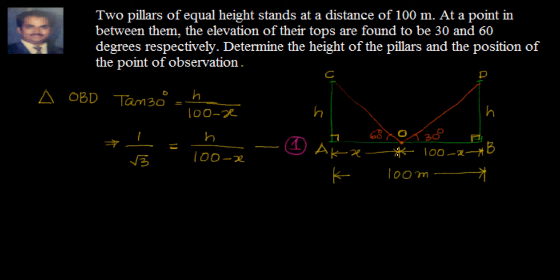Now, I will go to the next triangle. The triangle is OAC. In this triangle, the angle of elevation is 60 degrees. Here it is 30 degrees, here it is 60 degrees. So I will say tan 60 degrees is equal to opposite side, that is equal to h by adjacent side, that is equal to x. This gives me h equal to root 3x. Tan 60 is root 3, so this becomes root 3x.